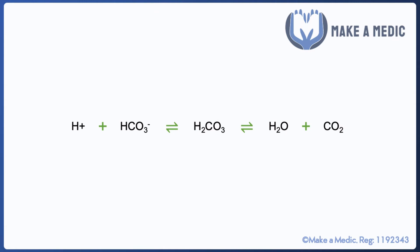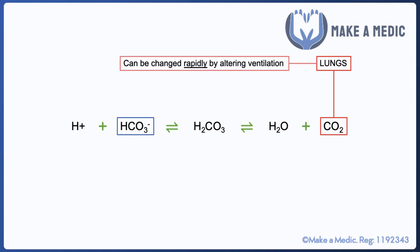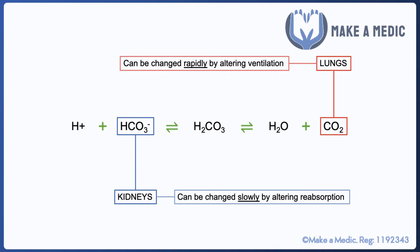The entirety of acid-base balance can be understood by applying this equation: carbon dioxide and water can combine to form carbonic acid, which can then dissociate to release protons and bicarbonate. Carbon dioxide is regulated by the lungs and adjusts quickly, whereas bicarbonate is regulated by the kidneys and takes more time to adjust to changes in acid-base balance.